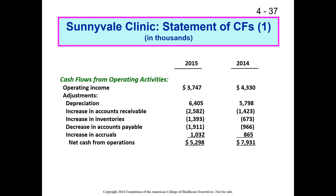A decrease in accounts payable — when a supplier sends us a $10,000 box of supplies and gives us 30 days to pay — means we're reducing the number of supplier loans. We'll always carry balances in accounts payable, accounts receivable, and inventories. But if accounts payable goes down, it means we've paid off those supplier credits, and we had to spend cash to do so. A decrease in accounts payable results in a decrease in cash on hand.